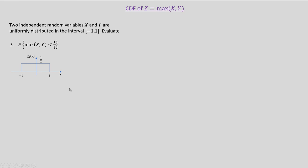Let us write down the given information. It is given that x is a uniformly distributed random variable from minus 1 to 1, and hence its PDF would be a rectangular function from minus 1 to plus 1. The corresponding CDF is obtained by integrating the PDF. From minus 1 to plus 1 it is a ramp function, and the equation of the ramp is given by x plus 1, and after 1 the amplitude of the function is plus 1.